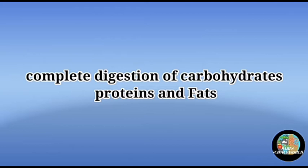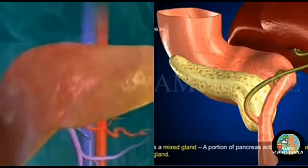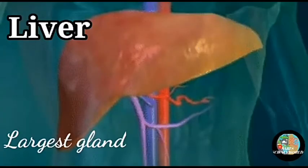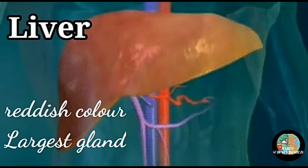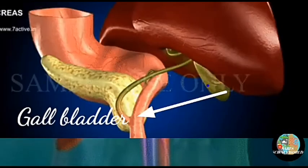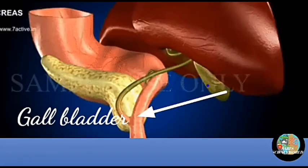The complete digestion of carbohydrates, proteins, and fats takes place in the small intestine. It receives the secretions of the liver and pancreas. The liver is the largest gland in our body — it is a reddish-colored gland located in the abdomen.